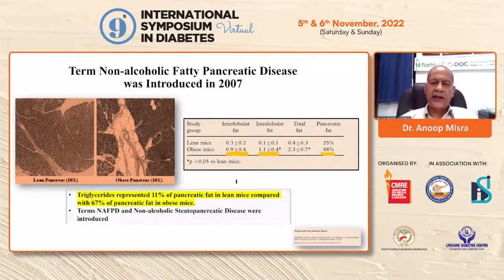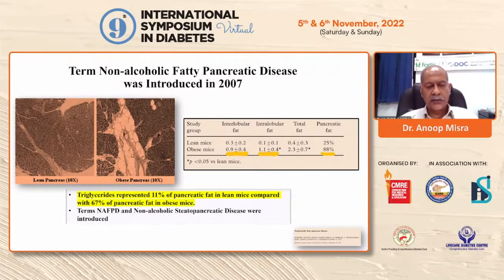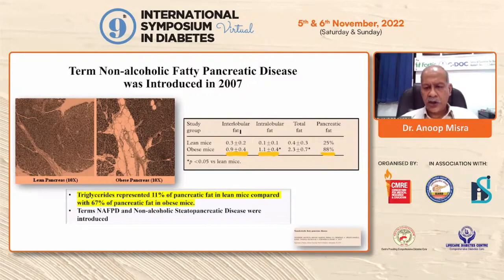The term non-alcoholic fatty pancreatic disease was first introduced in 2007 in a paper by an Indian researcher in the United States. They took lean and obese mice and compared their pancreatic tissue side by side. Triglycerides represented 11 percent of pancreatic fat in lean mice compared to 67 percent in obese mice, with remarkable differences in intralobular fat. At this time, the terms non-alcoholic fatty pancreatic disease and non-alcoholic steatopancreatitis were introduced.